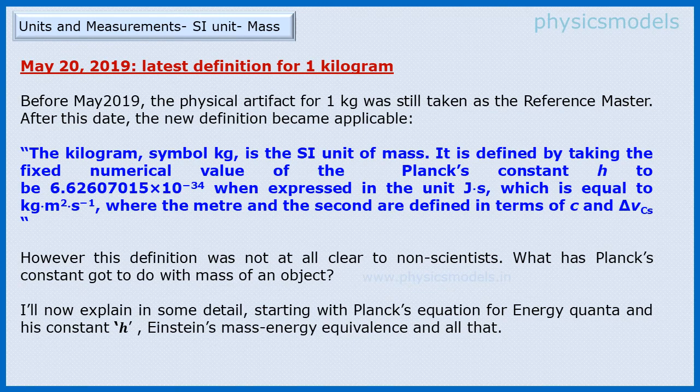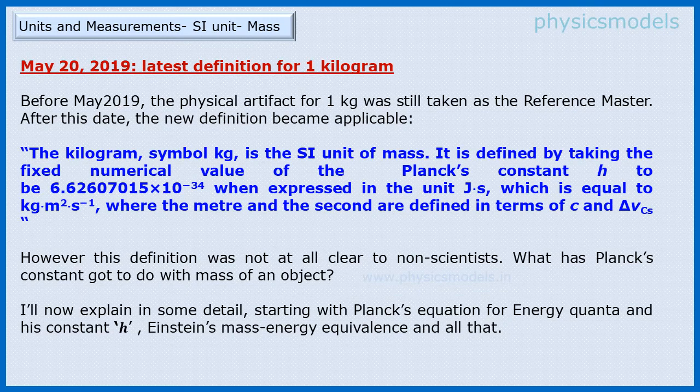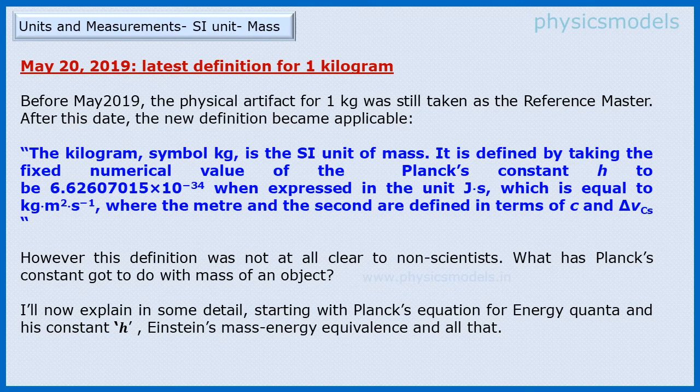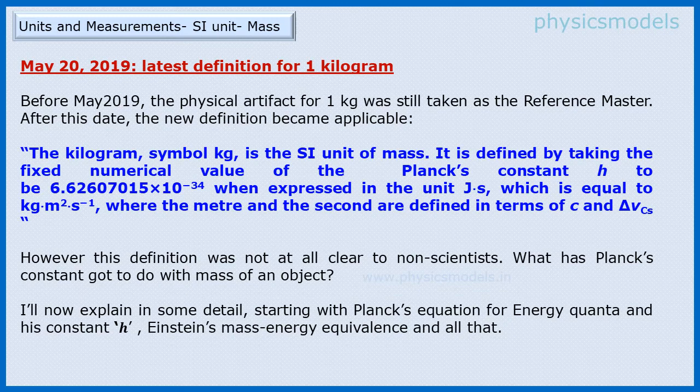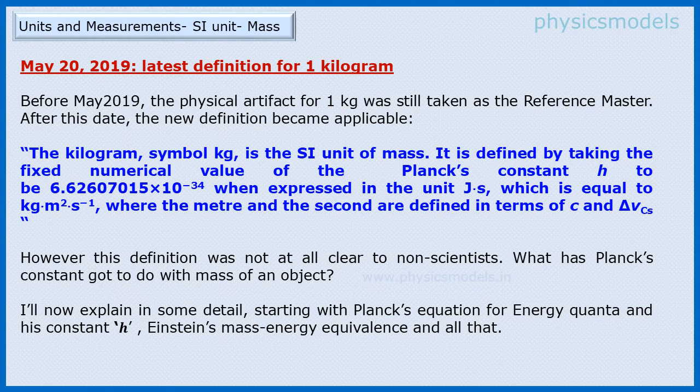By May 20th 2019, the latest definition of one kilogram mass was released by scientists as follows: The kilogram is the SI unit of mass and is defined by taking the fixed numerical value of Planck's constant H to be 6.62607015 × 10^-34 when expressed in the unit Joule second, which is equal to kilogram meter squared per second, where the meter and the second are defined in terms of c, the speed of light, and Δν_Cs, which is the frequency of the cesium-133 atom.